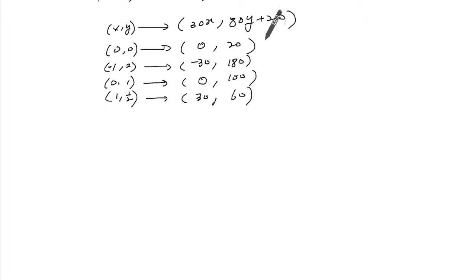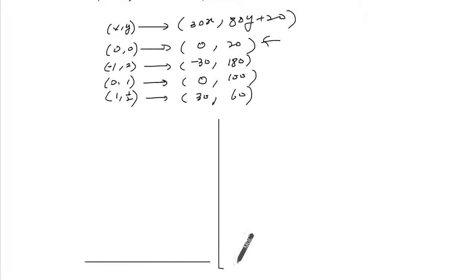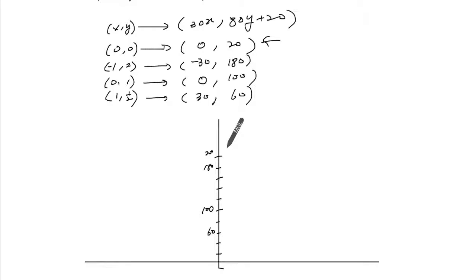This point is not on the graph but it's important because it gives you the asymptote. Starting at (0, 20), going up: 20, 40, 60, 80, 100 — so 200, 180. And this point is 60, which needs to be 30, so this is 20.